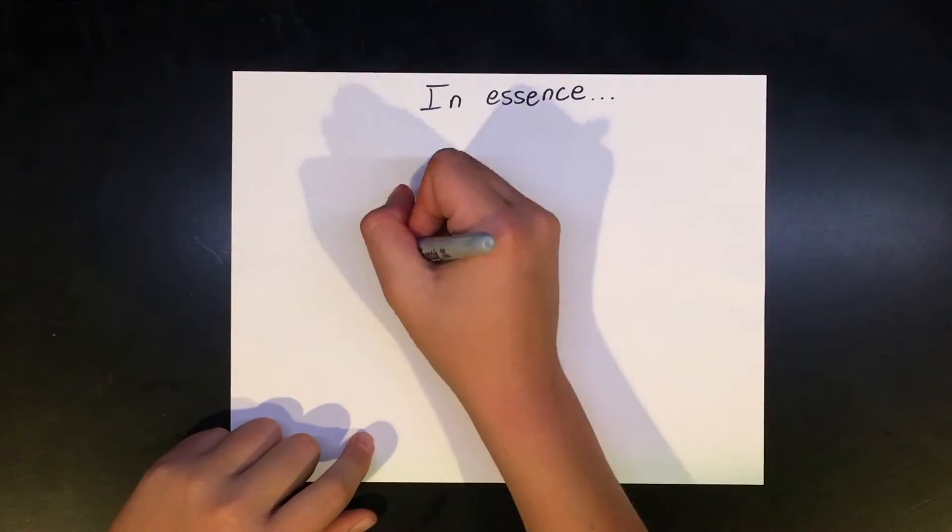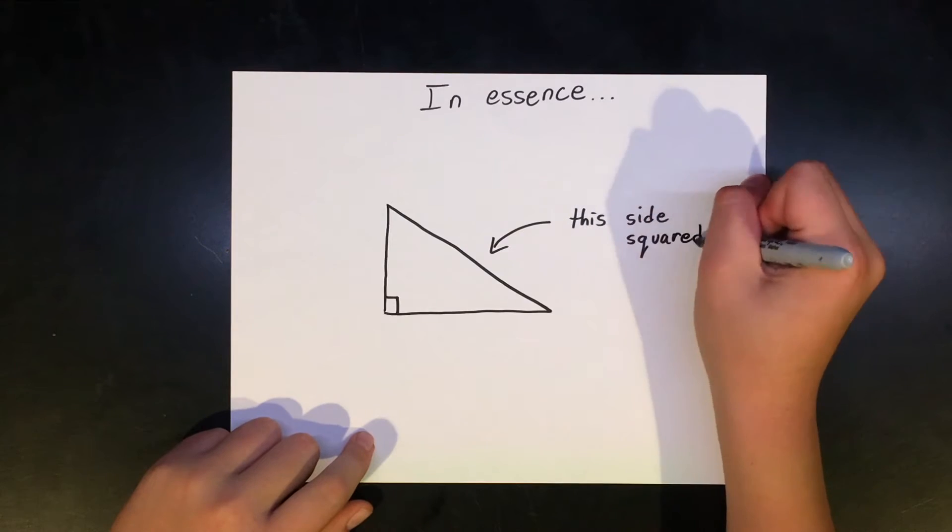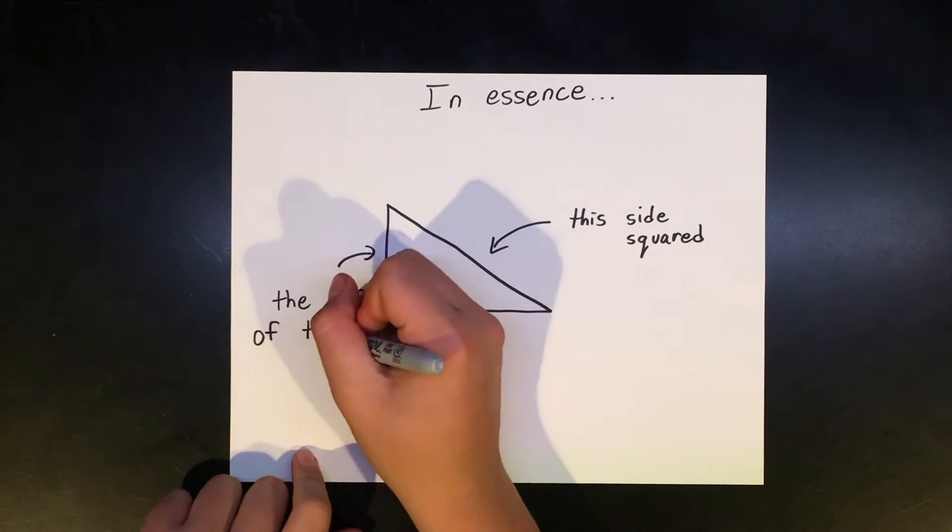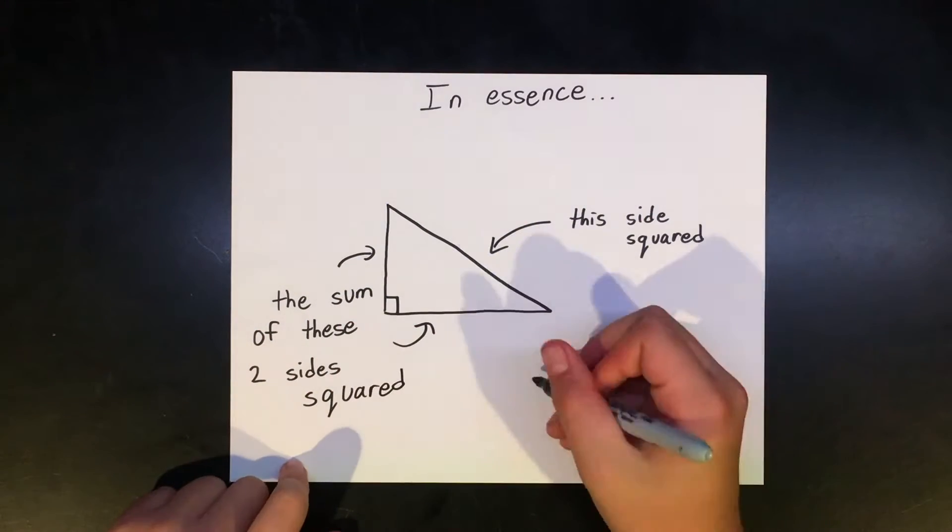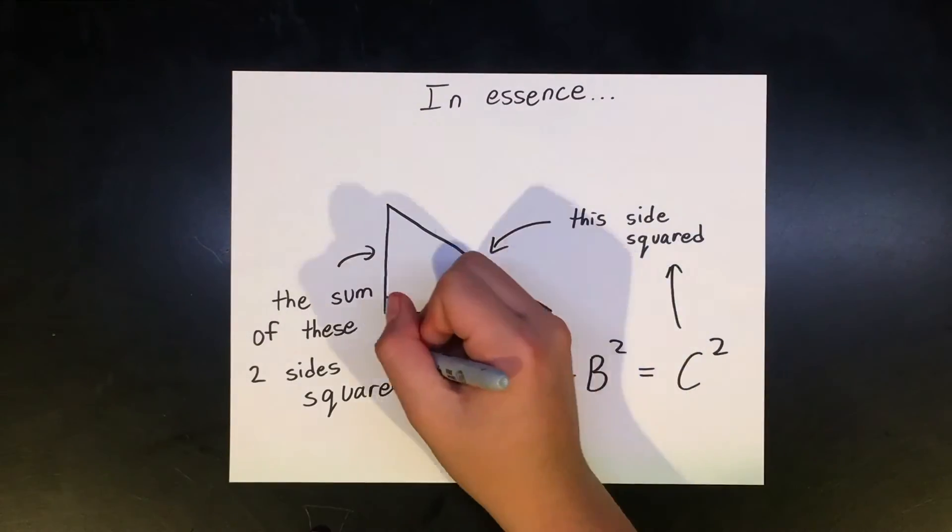To simplify that definition, if you square the longest side of a right triangle, then the other two sides can both be squared and added up to equal that number. The equation this is represented by is a squared plus b squared equals c squared.